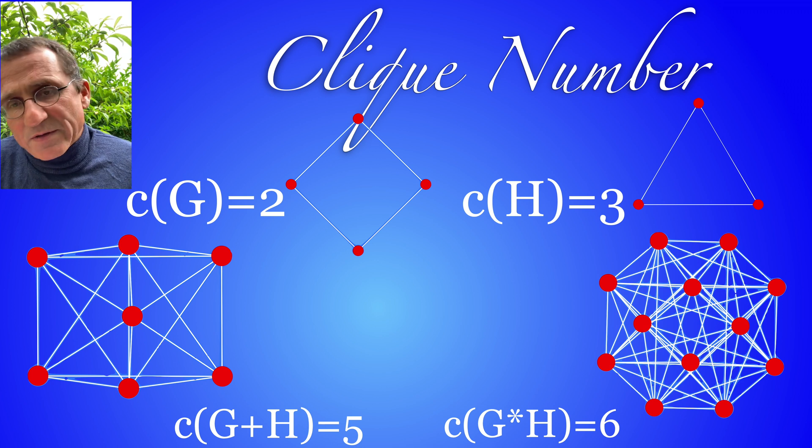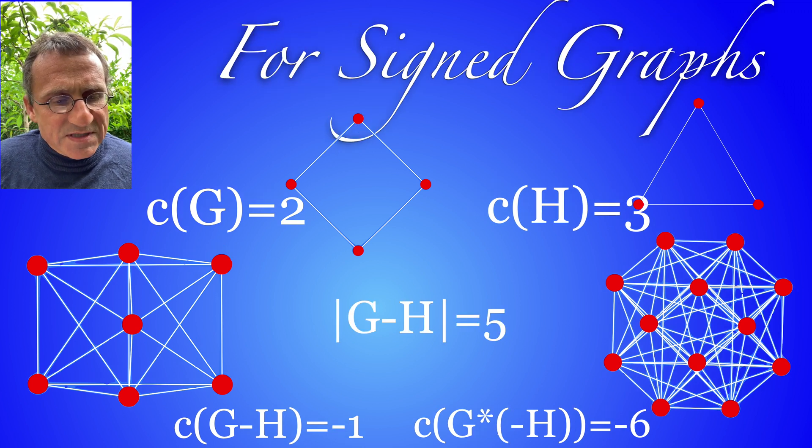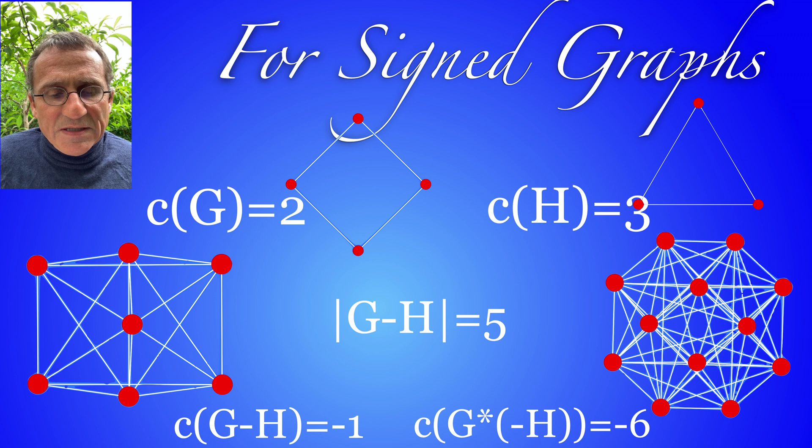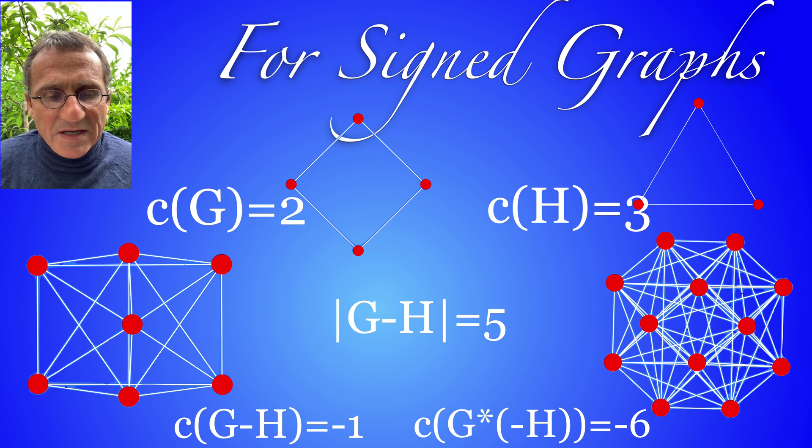On the ring however it can then be zero. So we see here examples also where we subtract, so we have an example where the clique number is minus one.